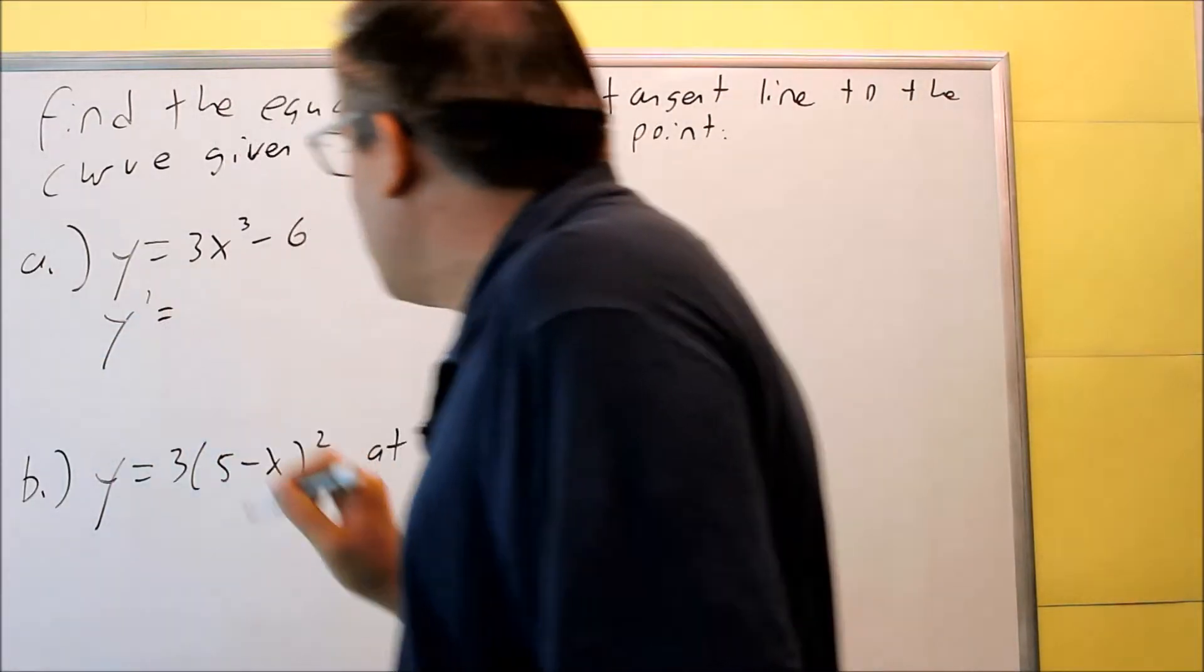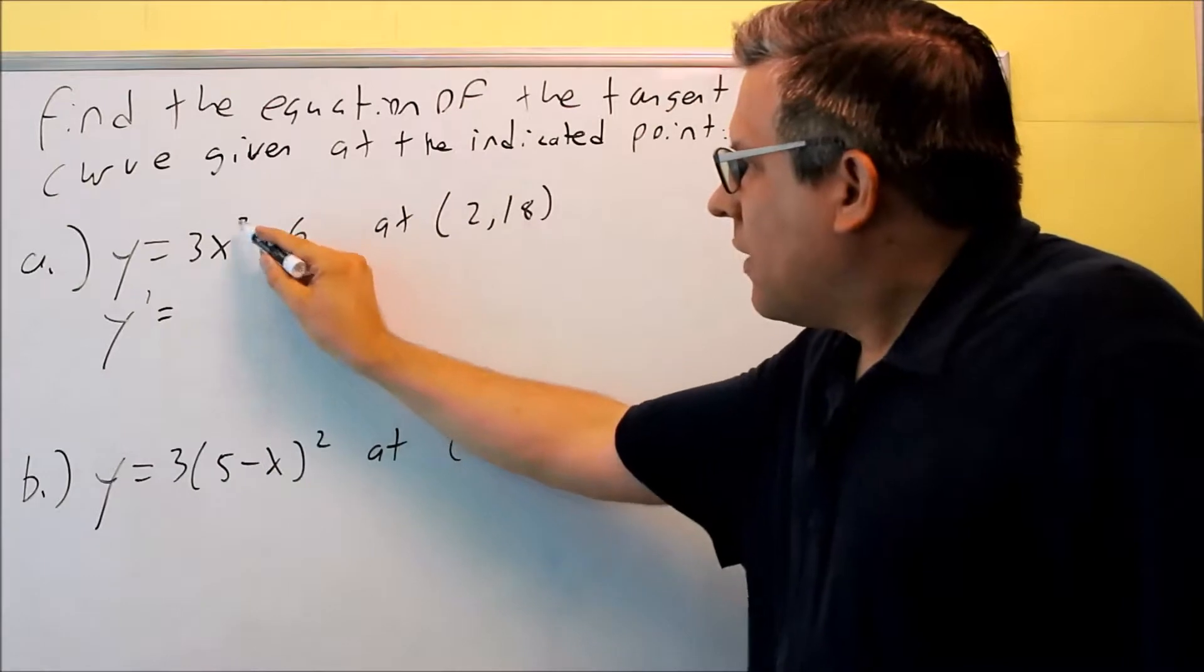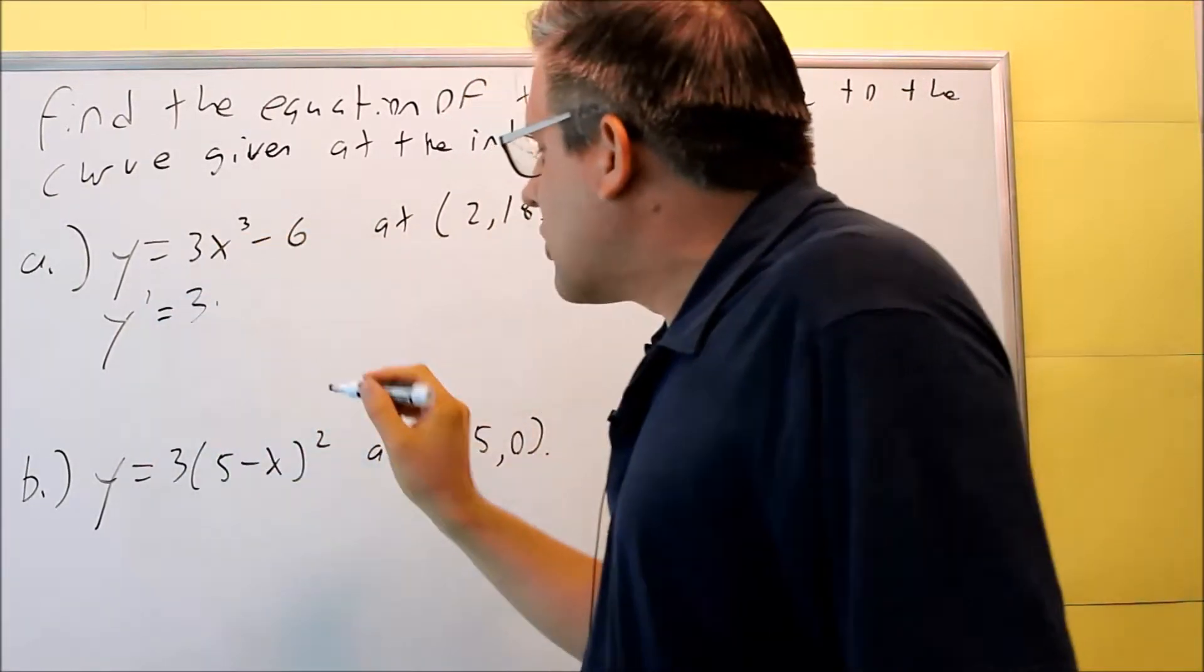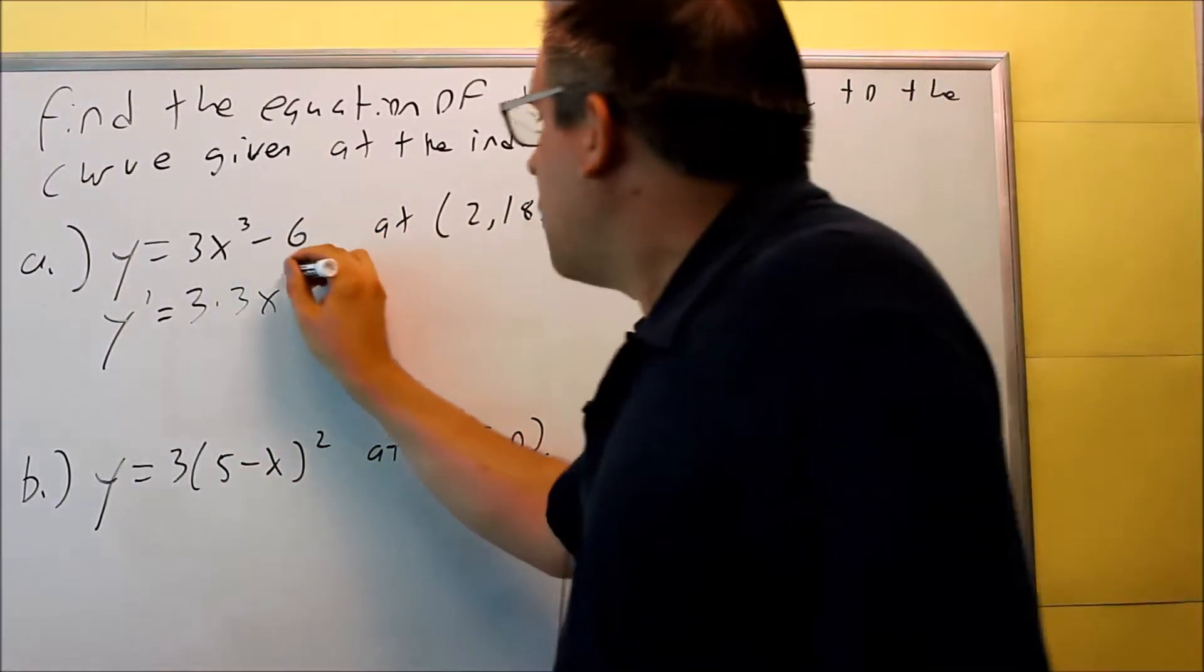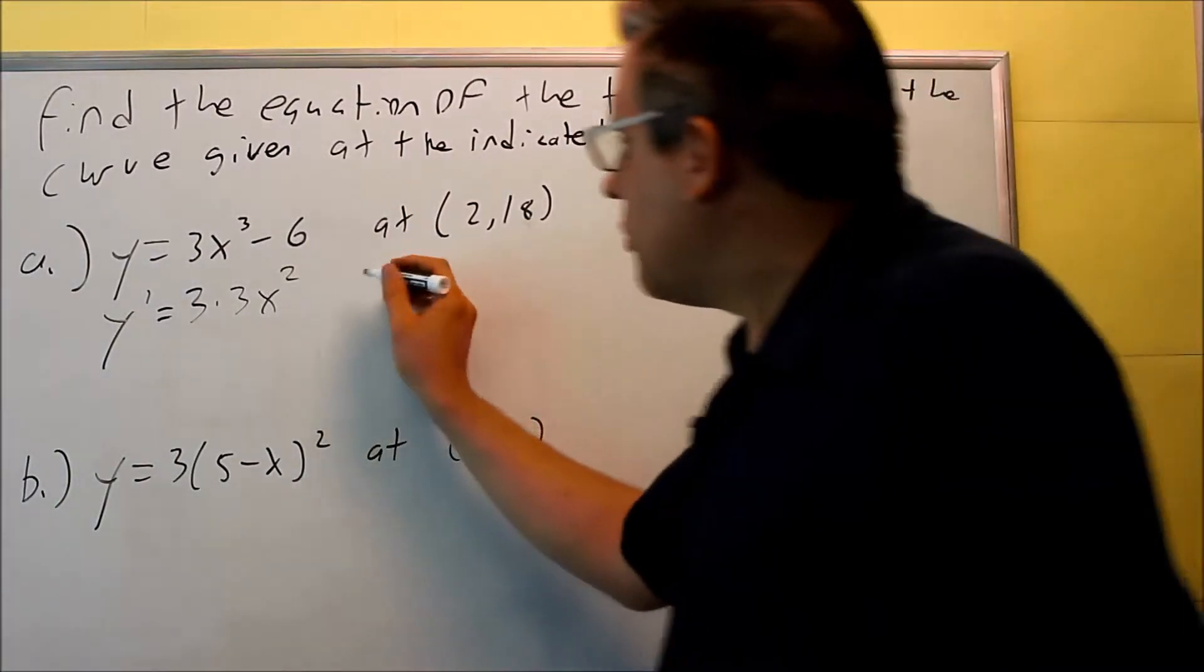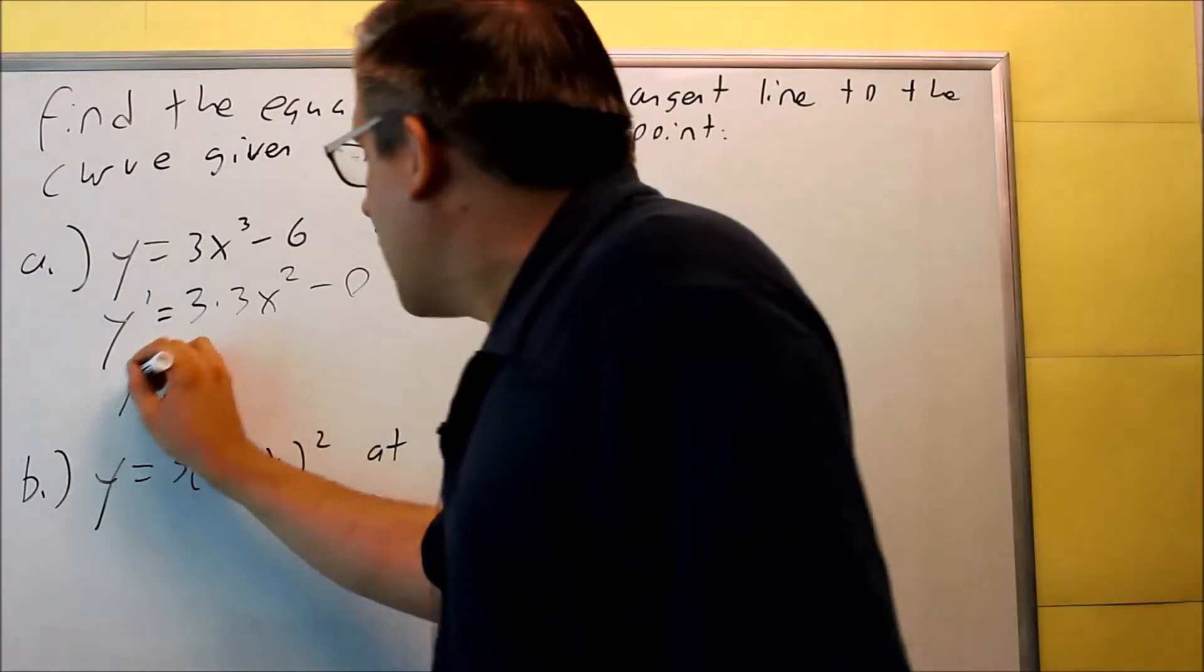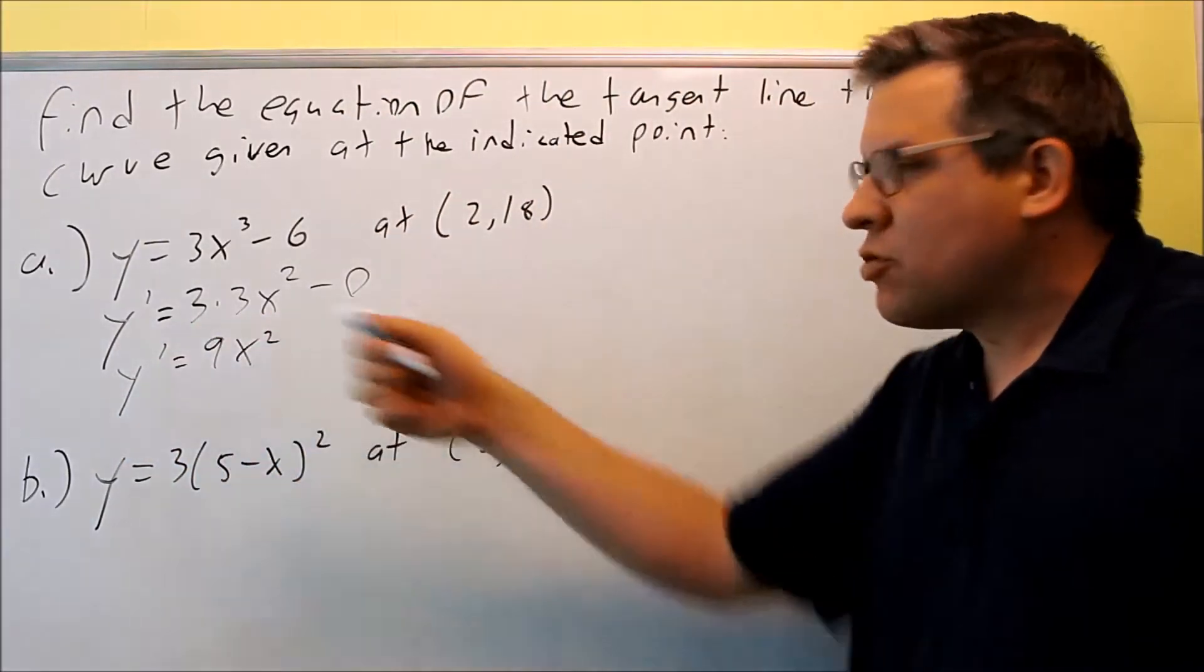Let's find the derivative. Derivative will give us our slope. By the power rule, I have three here, which is a constant. The three in the exponent is going to come down. X subtract one from the exponent, and I get two. Derivative of negative six is going to be zero. Then we can simplify that, and we get nine x squared. That's the derivative.